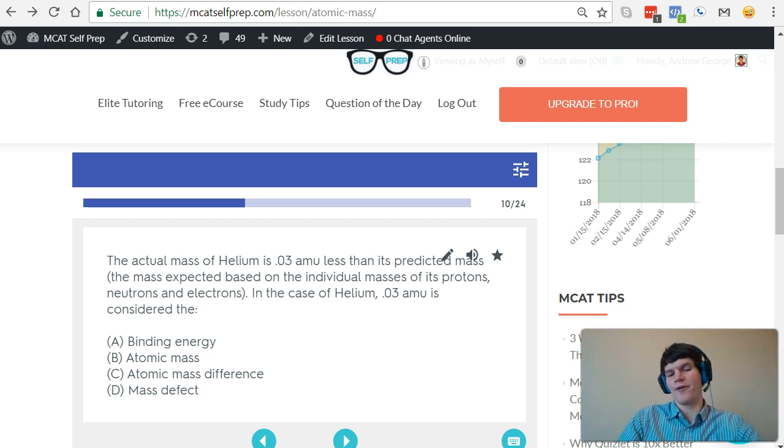Answer choice A, binding energy. Now, we know that binding energy is the energy that's required to separate those protons from each other. So, we can immediately cross off that answer choice. What about atomic mass? Now, atomic mass is the actual mass of helium. So, that's irrelevant.